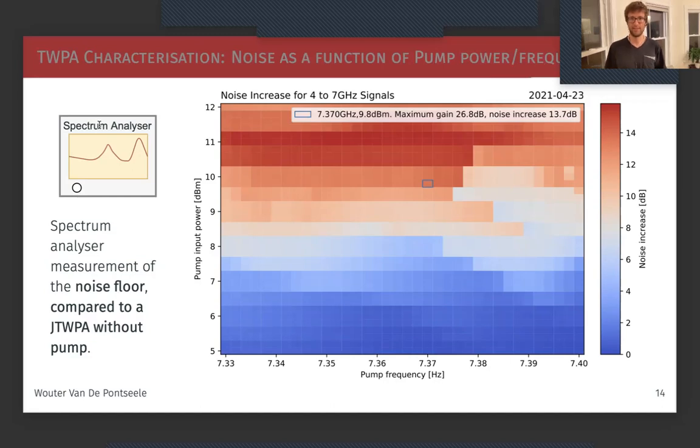There will also be a noise increase, and this we measure with the spectrum analyzer. We can now look at the same two-dimensional grid of pump settings—pump power and pump frequency—and see what the noise increases. The blue box here shows where we found the optimal gain of a bit above 25 decibels. We see that that's definitely not the lowest noise increase, so it's not the optimal.